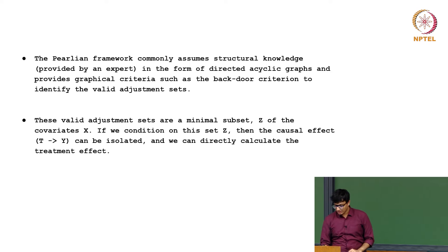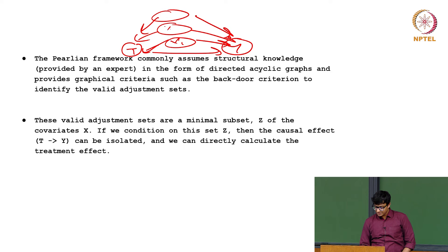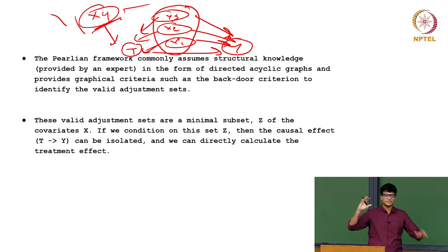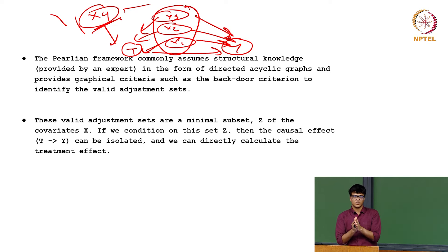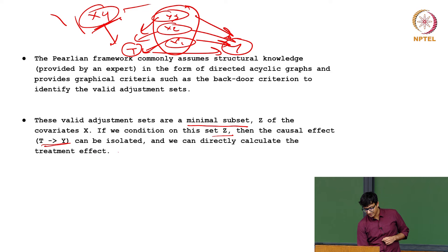This framework provides graphical criteria like d-separation and backdoor criteria to identify what is called the valid adjustment set — the set Z. Z is a minimal subset of the covariates X such that if we condition on Z, the causal effect from T to Y can be isolated and we can directly calculate the treatment effect.